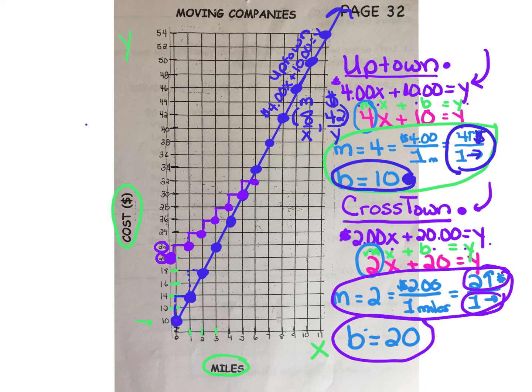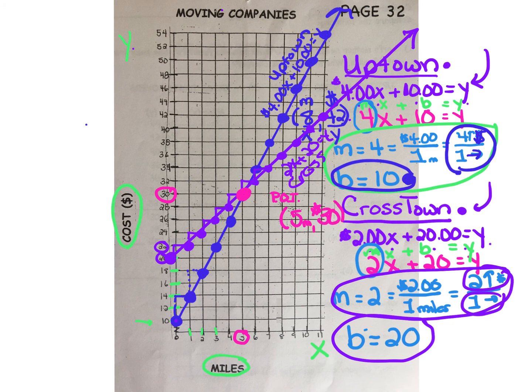And you will notice that the lines intersect. You can see that the lines intersect right here. This is what we call the POI, point of intersection. And that occurs at 5 miles, $30. So at 5 miles, both companies will charge $30.